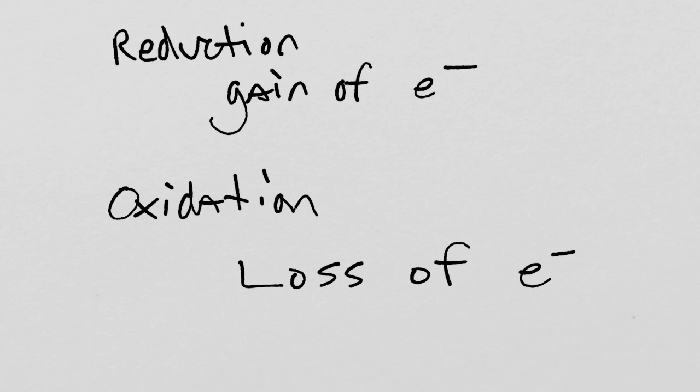And there's a mnemonic you can use to remember this. And there's a couple actually. Oil rig. And it just means, or it just implies, oxidation is loss, reduction is gain. The other one is leoger. And these help. Some people, once you memorize it, then you know it. But this helps in the beginning. Lose electrons oxidized. Gain electrons reduced.